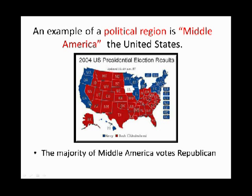Here's an example of a political region. It's called Middle America, and this is statistics from the 2004 presidential election. The red voted Republican—the Republican candidate was George Bush. The Democratic candidate was John Kerry back then. Basically you can say this is a Democratic region, this is a Republican region, and this is another Democratic region. So the way people vote can create regions too.